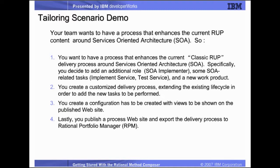Here's the method tailoring scenario we will perform in parts 2 and 3 of the demo. Your team wants to have a process that enhances the current classic RUP delivery process around SOA. Specifically, you decide to add an additional role — that of the SOA implementer — some SOA-related tasks such as implement service and test service, and a new work product called service implementation. We'll create a customized delivery process extending the existing life cycle to add the new tasks, create a configuration with views for the published website, publish a process website, and export the delivery process to Rational Portfolio Manager.